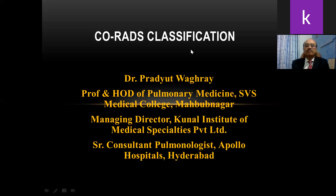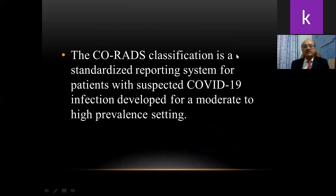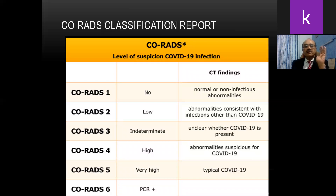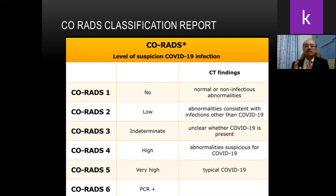The CORADS classification is a standardized reporting system developed in the Netherlands for patients with suspected COVID-19 infection, and this is developed for a place with moderate to high prevalence of this infection. This classification divides the CT findings into six types. CORADS 1 is where there is no suspicion at all of COVID-19 — this is basically normal or showing certain non-infectious abnormalities.